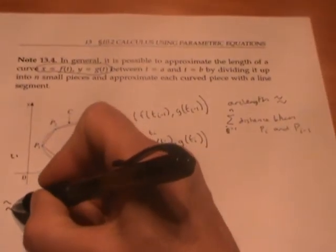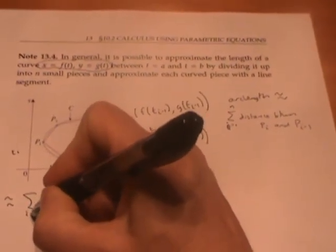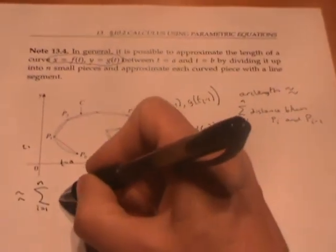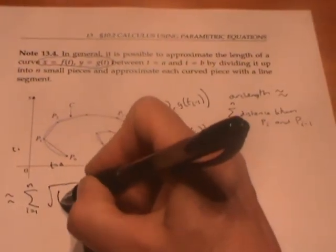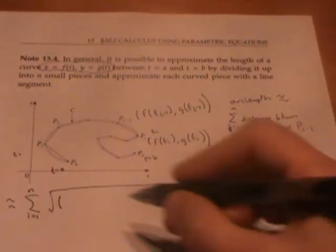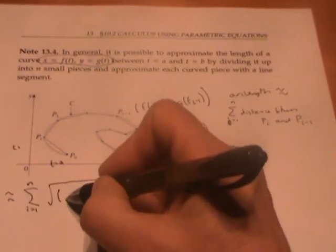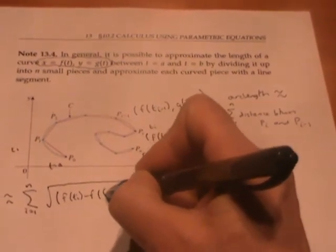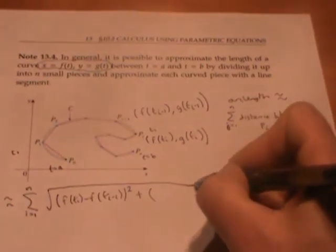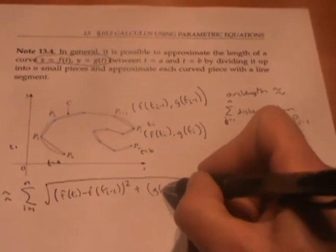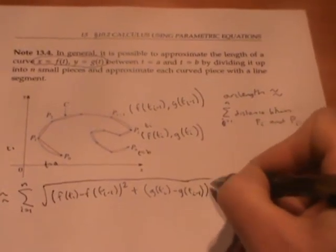We're going to use the distance formula to do that. So we have the sum from i equals 1 to n of the square root of the differences between the x-coordinates squared—that's f of tI minus f of tI minus 1 squared—plus the difference between the y-coordinates squared: g of tI minus g of tI minus 1 squared.